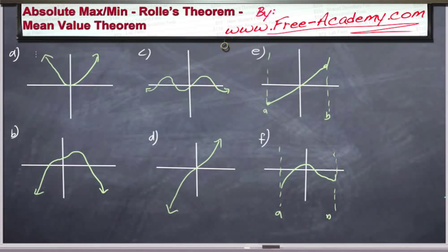Looking at the first problem, we've got something like a parabola, increasing as it goes to negative infinity and positive infinity, and we have a minimum point. So we can say this has an absolute minimum — an absolute extremum — from negative infinity to positive infinity. Problem B has an absolute max but no absolute minimum. Problem C has both absolute maximums and minimums from negative infinity to infinity. Problem D has no maximum or minimum anywhere from negative infinity to positive infinity.